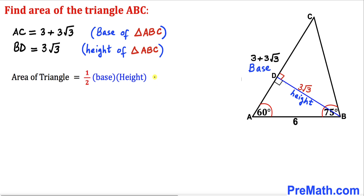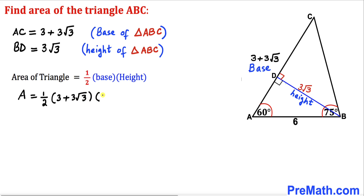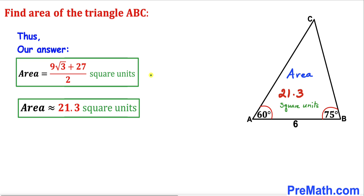Now let's recall the area of a triangle formula: Area equals one half times base times height, where our base is 3 plus 3 times square root of 3, and our height is 3 times square root of 3. So the area of triangle ABC is one half times (3 plus 3 times square root of 3) times (3 times square root of 3). Simplifying, the area turns out to be (9 times square root of 3 plus 27) divided by 2. And here is the area of triangle ABC also expressed as a decimal.